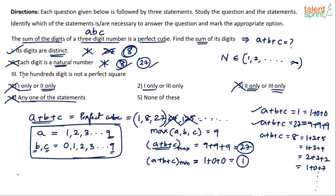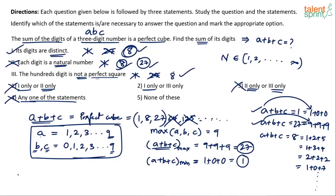Now let's move to Statement 3: the hundreds digit is not a perfect square. When the sum is 1, the hundreds digit a is 1 — which is a perfect square. When the sum is 27, the hundreds digit a is 9 — which is also a perfect square. So the statement that the hundreds digit is not a perfect square rules out both sum = 1 and sum = 27. Therefore only sum = 8 is possible — just like Statement 1 alone, Statement 3 alone also gives us the unique answer of 8.